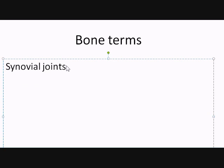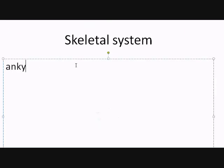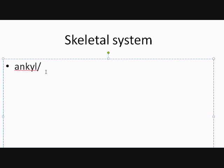Now we're going to get into some terms that you'll find on exams — not just general bone terms but general skeletal system terms. If you have the root 'ankyl,' we're talking about something stiff, bent, or crooked. For instance, ankylosis would mean an abnormal condition of stiffness, bent position, or crookedness.